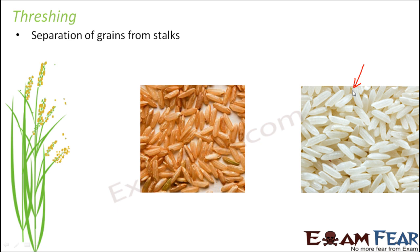Inside that covering are the rice grains, and we are interested in these rice grains. The entire process of cultivating these plants and getting the rice grains involves many steps. The first step is to separate the grains from the stocks. One single stock can have multiple seeds, as you can see here. This separation is done by threshing.